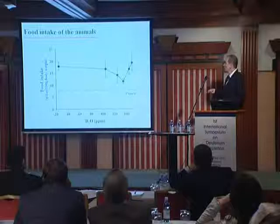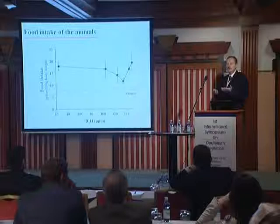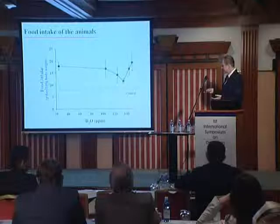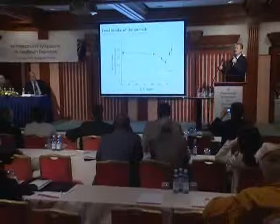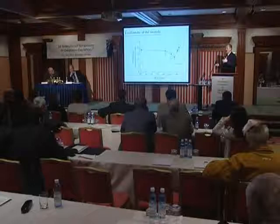When we looked at food intake — which is very important — the diabetic animal eats and drinks a lot, then excretes it all. As you see, it again has an optimum. The tap water group ingested a lot of food, but when we decreased the deuterium content, they needed less food and gained much more weight. So they utilized food more efficiently.